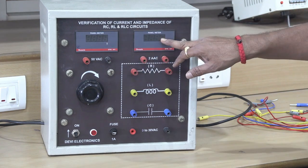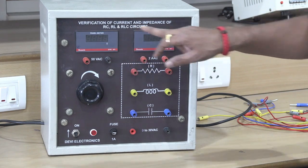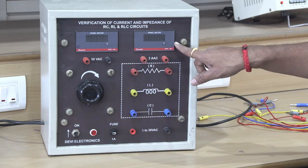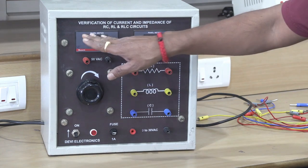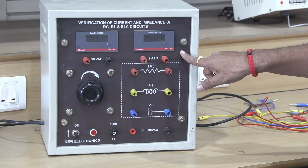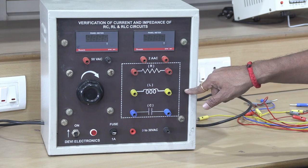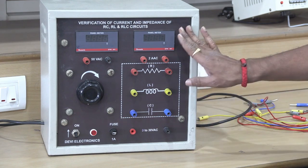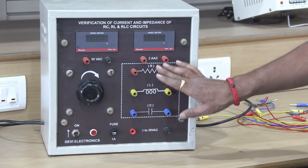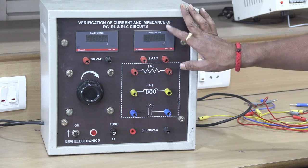I will set 5 volts and note the current, 10 volts and note the current, 15 volts and note the current, 20 volts and note the current. For every voltage value and current value, calculate the Z value and take the average.